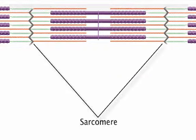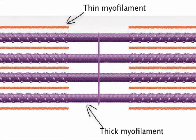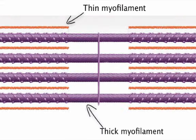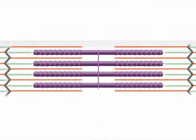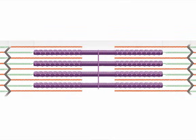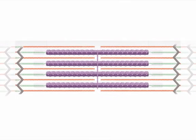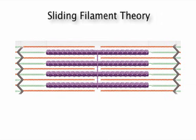The myofilaments of the sarcomere do not become any shorter during contraction. What happens is the thin filaments slide over the thick ones and pull the boundaries of the sarcomere toward the middle. This causes the sarcomere itself to get shorter. For this reason, the mechanism of contraction is called the sliding filament theory, and it occurs in a series of steps.